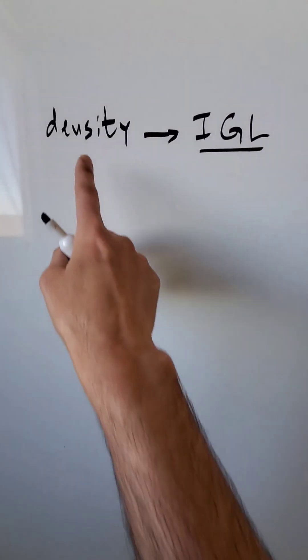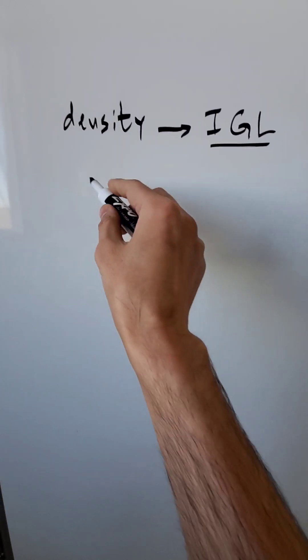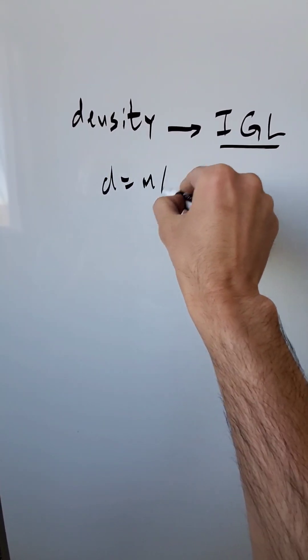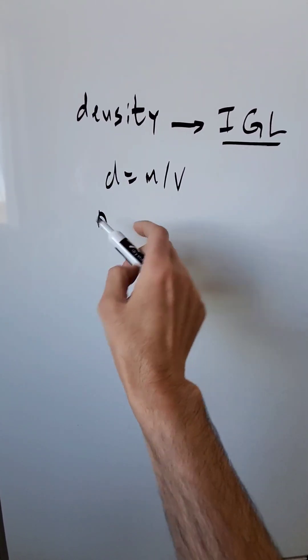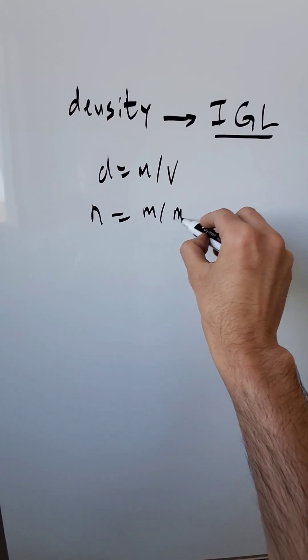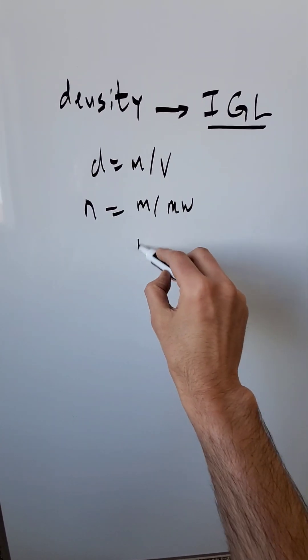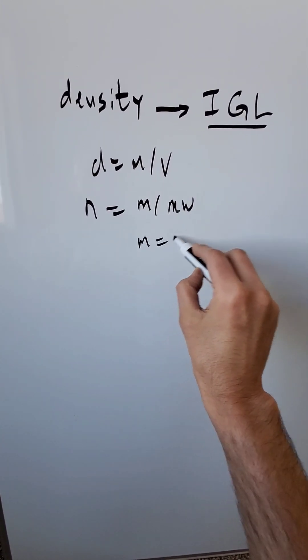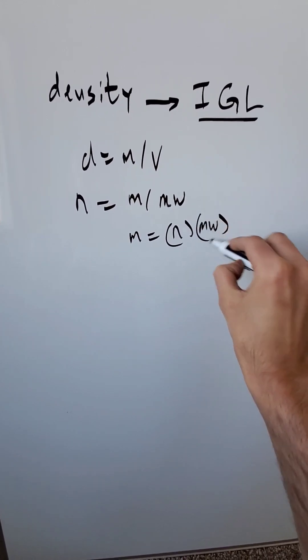If you have a hypothetical ideal gas, how can you relate the density of that ideal gas to the ideal gas law? We know density is equal to mass divided by volume. Moles, symbolized as n, is equal to mass divided by molecular weight or molar mass. From the same equation, you can solve for mass: mass is equal to moles times your molecular weight or molar mass.